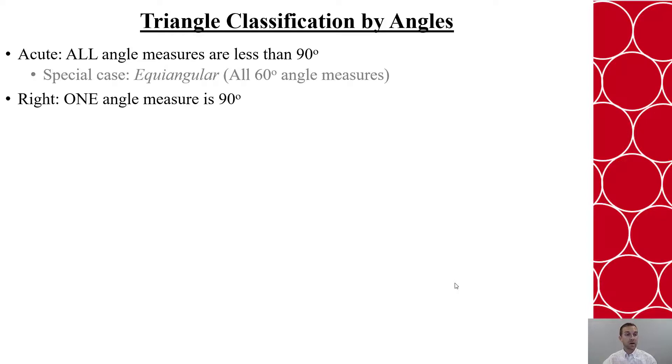We also have the right triangle, where exactly one angle measure is 90 degrees. And then we have the obtuse triangle, where exactly one angle measure is greater than 90 degrees. It's that 90 degree measure that is the separator between these three classifications.